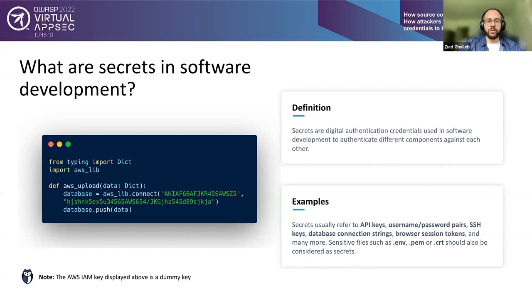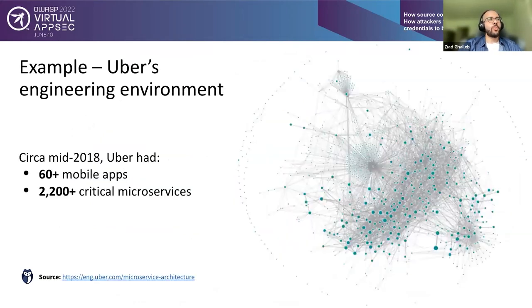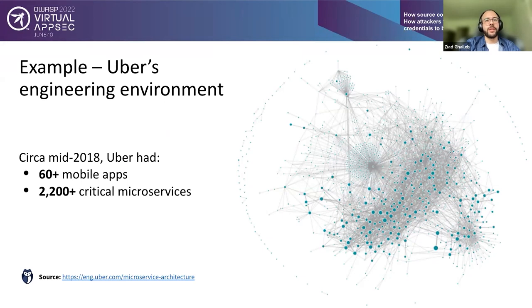We have a hard-coded AWS key here as an example — a dummy key, so don't try pinging the AWS server. We'll discuss how these keys should not be hard-coded in git repositories. Modern applications are built very differently from a decade ago: developers take off-the-shelf components, third-party APIs, build microservices, and connect them all together. Uber's engineering environment circa mid-2018 mapped more than 2,200 critical microservices in its ecosystem.